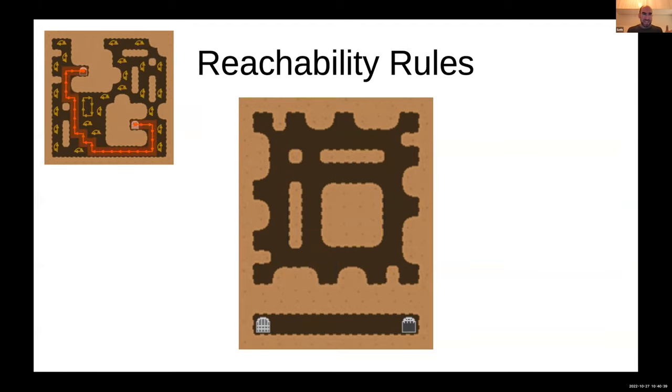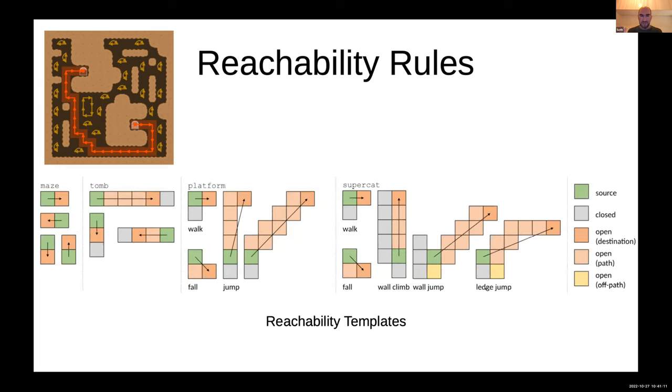Probably the most complicated set of rules is these reachability rules that basically say there's a path from the start to the goal. In this cave maze kind of game, from this green tile, you could possibly go north, south, east, west. But in this particular configuration, you can't go east, west because these are solid or closed and the north, south are okay because they're open. There's a bunch of these reachability templates that basically say for a particular location, where can you move to from that location if the open and closed tiles are respected.